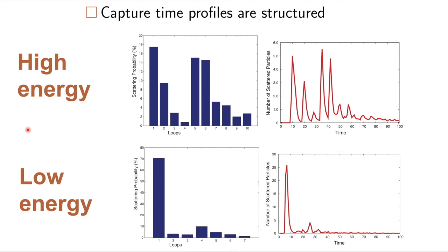A high energy, this is the probability of being captured for a certain number of loops, and then this shows continuous time, and then low energy. The highest probability is just one loop, and then, strangely, there's a peak at four, etc.